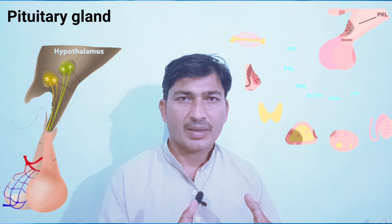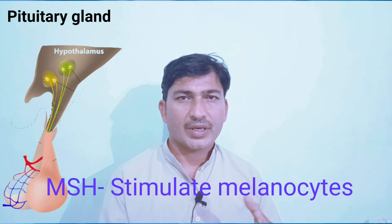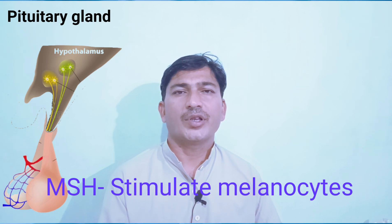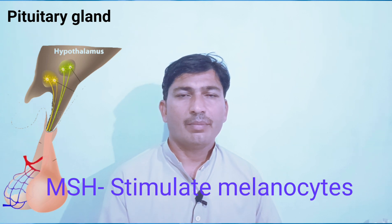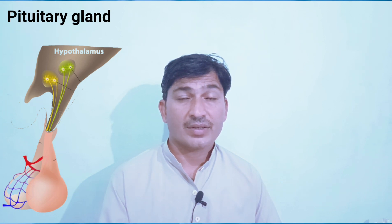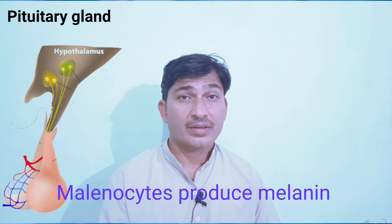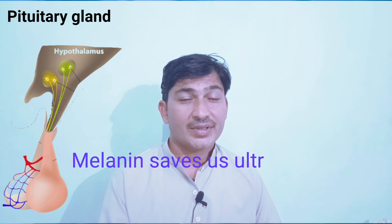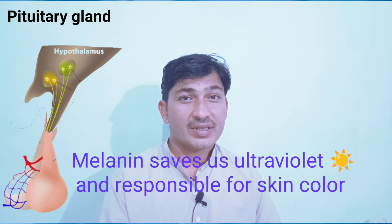The last important hormone of the anterior pituitary gland is MSH, or melanocyte stimulating hormone. This hormone stimulates the melanocyte cells of the skin. When the melanocyte cells are stimulated, they secrete melanin, which saves our skin from the sun's harmful rays.